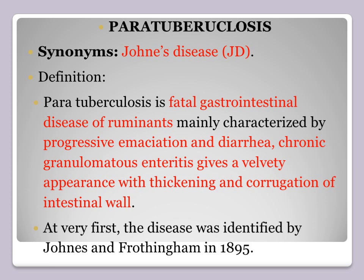There is chronic granulomatous enteritis, which gives a velvety appearance to the intestine with thickening and corrugation of the intestinal wall. This corrugation and thickening is the characteristic pathology of the disease. The disease was first identified by scientists Johne and Frothingham in 1895, and it is therefore named Johne's disease.